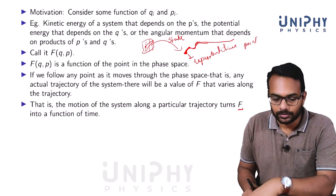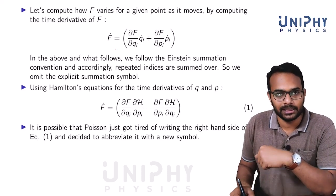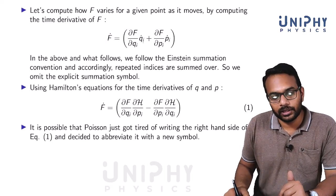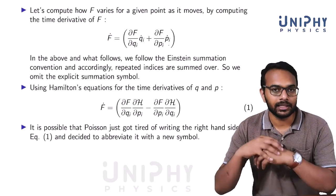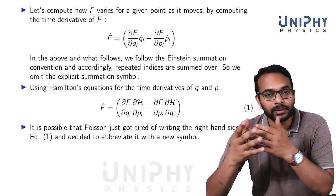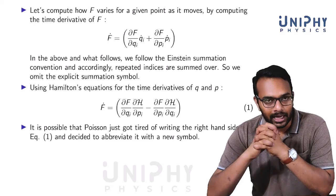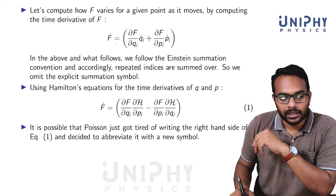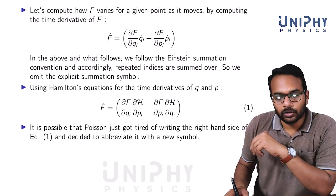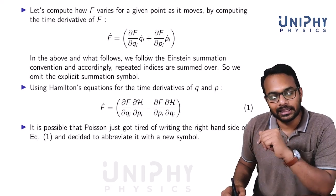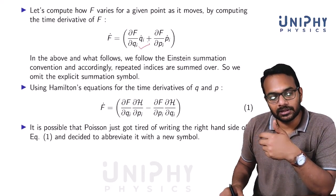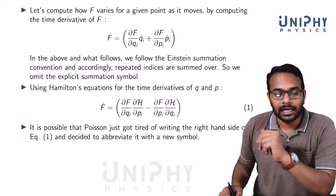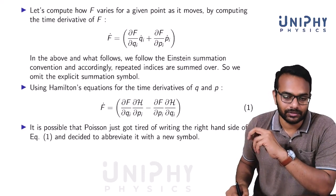The motion of the system along a trajectory turns f into a function of time because q and p are generally functions of time. We can look at the time evolution of f — find f-dot or df/dt. Using the chain rule: f-dot equals (∂f/∂q_i) q_i-dot plus (∂f/∂p_i) p_i-dot, with a sum over all i using the Einstein summation convention.